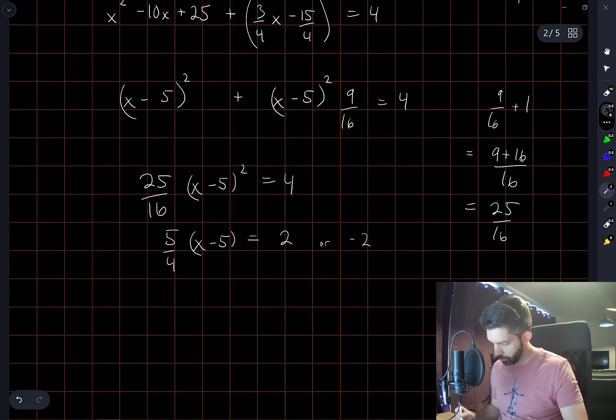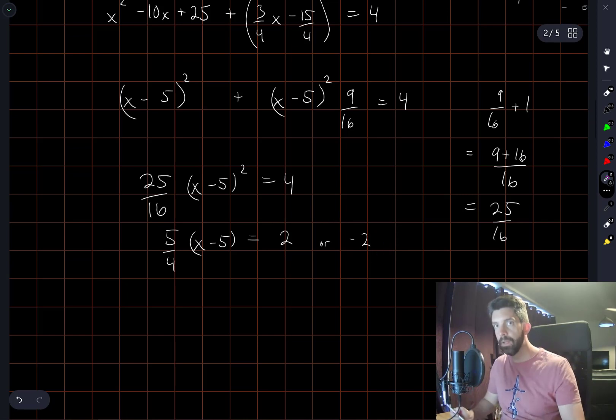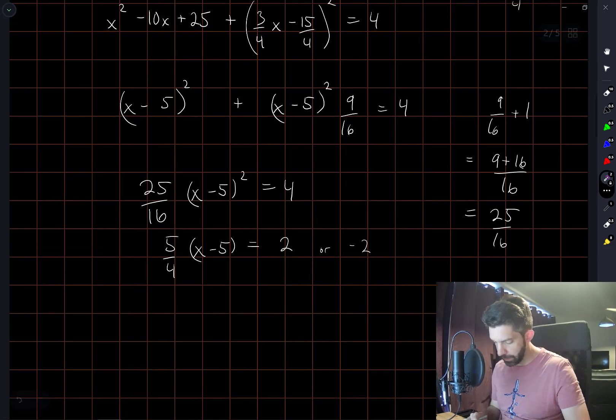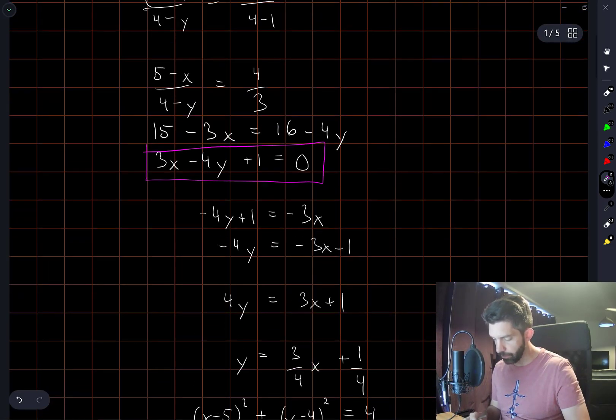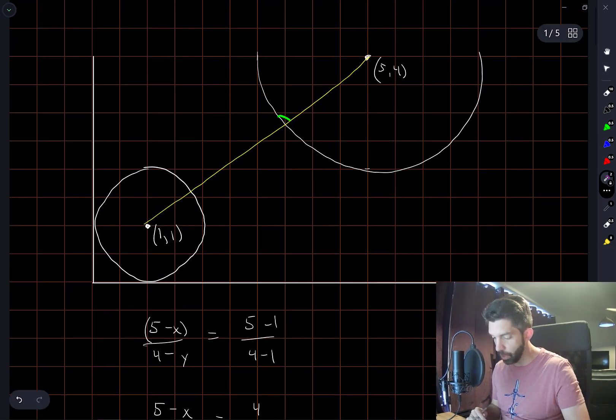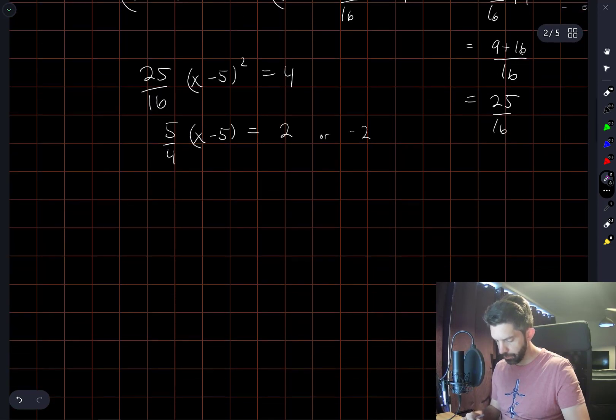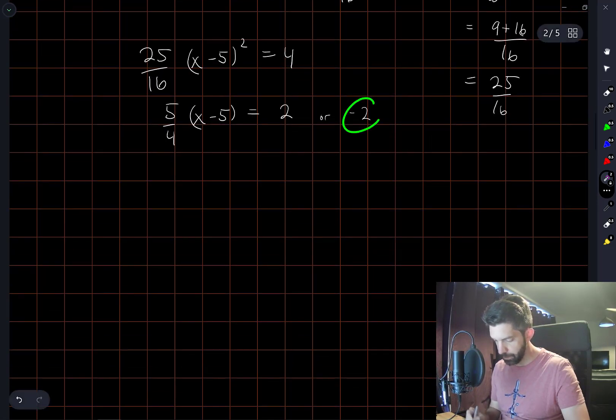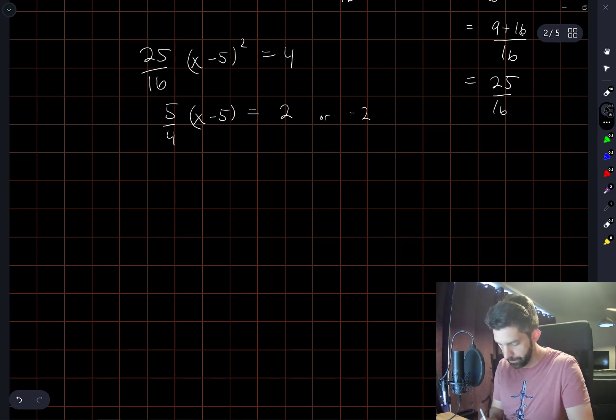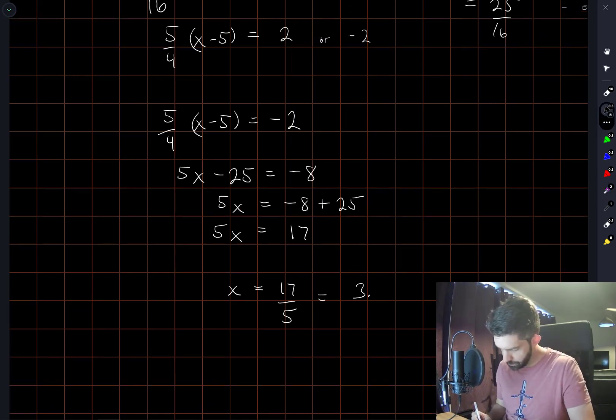So when I take a square root of both sides of this equation, I have to keep in mind that I could be dealing with positive or negative square roots. But I'm only interested in one value of x, and I'm going to be interested in the value of x which is smaller, not the one which intersects the circle up here. So that's going to be the one corresponding to negative 2 here, right? I won't need to carry the positive 2 anymore. So I get a value of x which is 3.4.